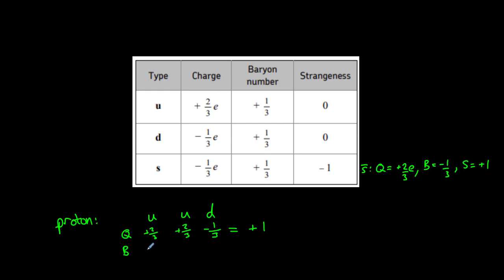They each have a baryon number of one-third, giving us a baryon number of one, again as we would expect for a baryon such as a proton. We also know that a proton has no strangeness, and that is true because the up and down quarks each have zero strangeness too.